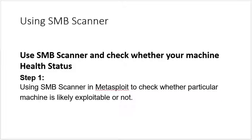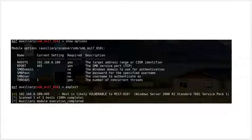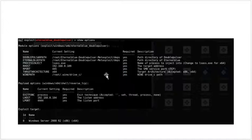The last thing is a scanner to check your system health and determine whether your machine is exploitable or not. You can use the SMB scanner — it is a simple tool you can download to check your machine's health status. This tool will give you information about what level of security vulnerabilities are present in your PC. I am sharing the screenshots here so you can check and fix those vulnerabilities.